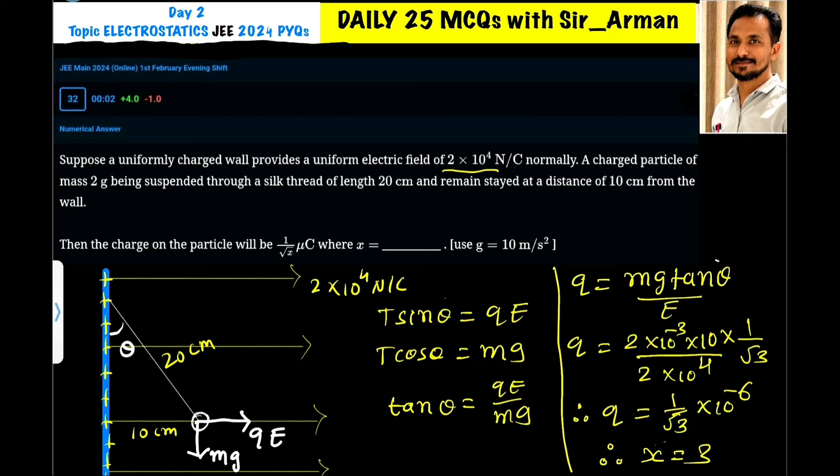T cos θ equals mg. If you take the ratio, T will get cancelled. Sine θ by cos θ is tan θ equals qE by mg. If you make q the subject, then it is mg tan θ by E.